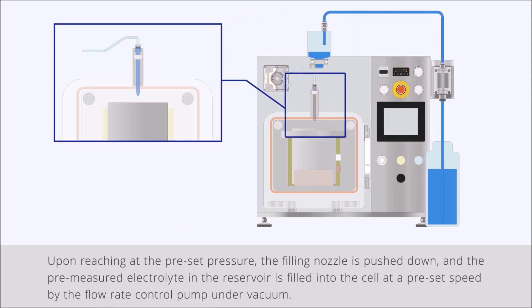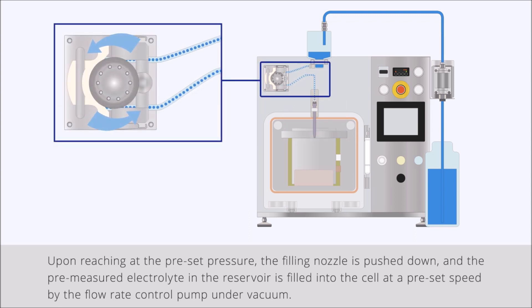Upon reaching the preset pressure, the filling nozzle is pushed down and the pre-measured electrolyte in the reservoir is filled into the cell at a preset speed by the flow rate control pump under vacuum.